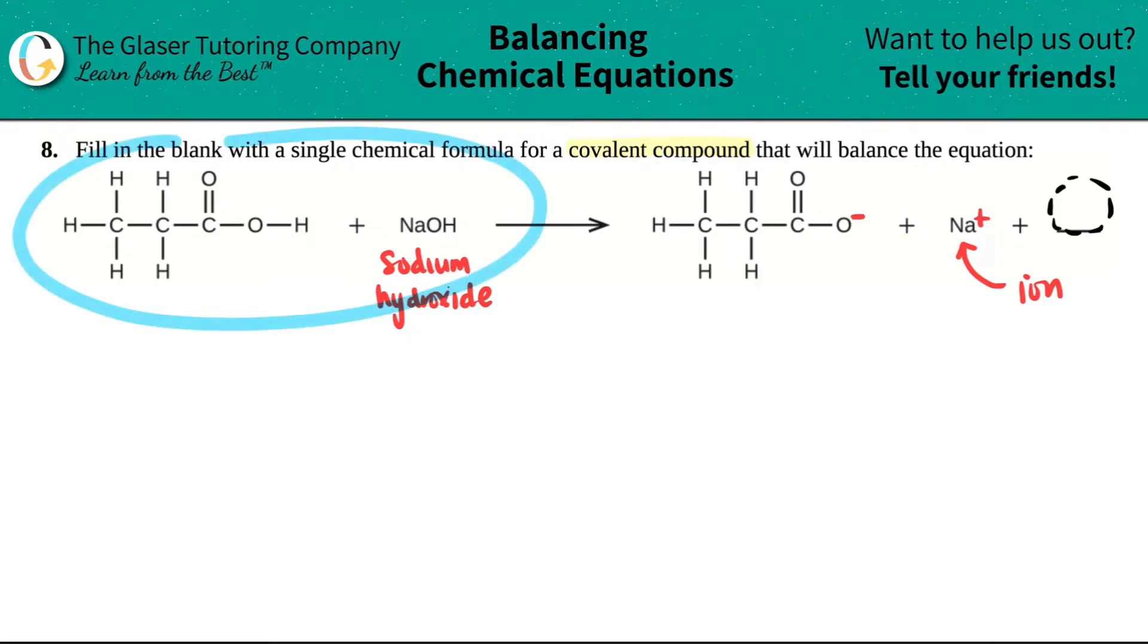I see on the left-hand side or the reactant side that I have three carbons coming from here, one, two, and three. And on the product side, I have one, two, and three. So the carbons are balanced.